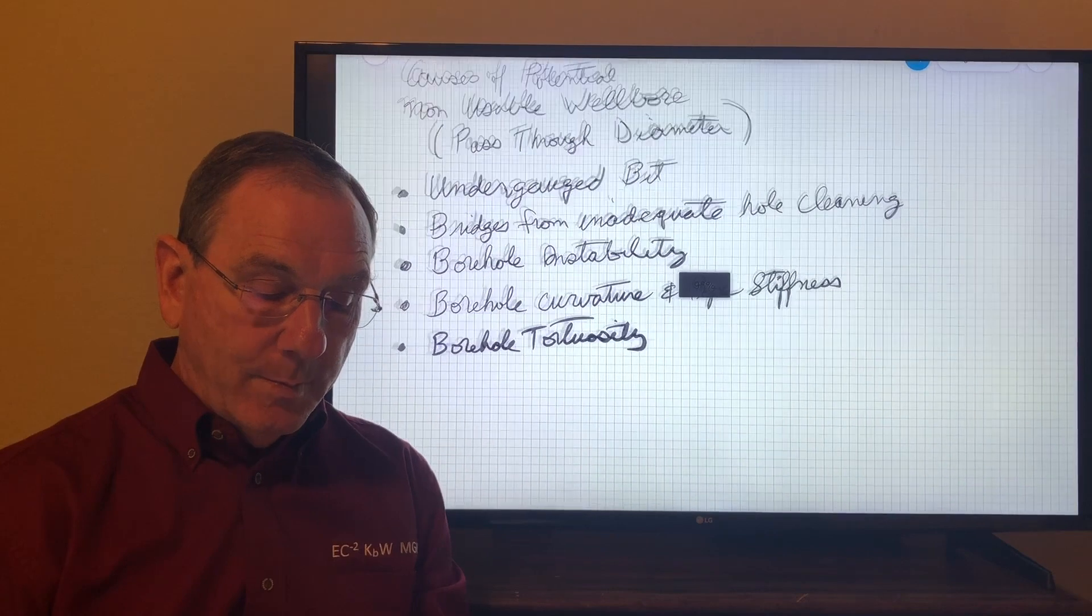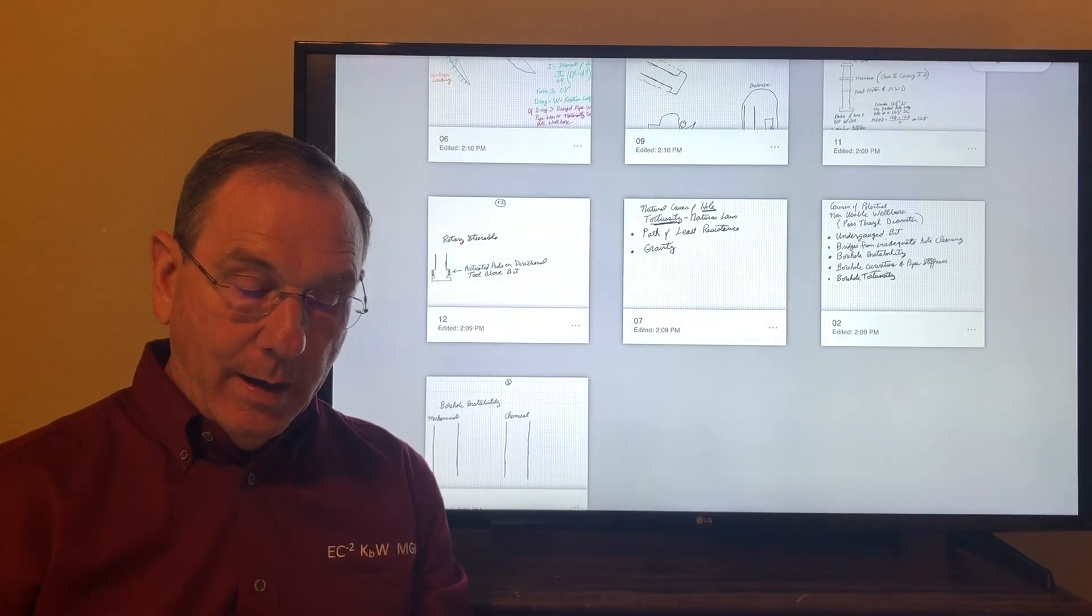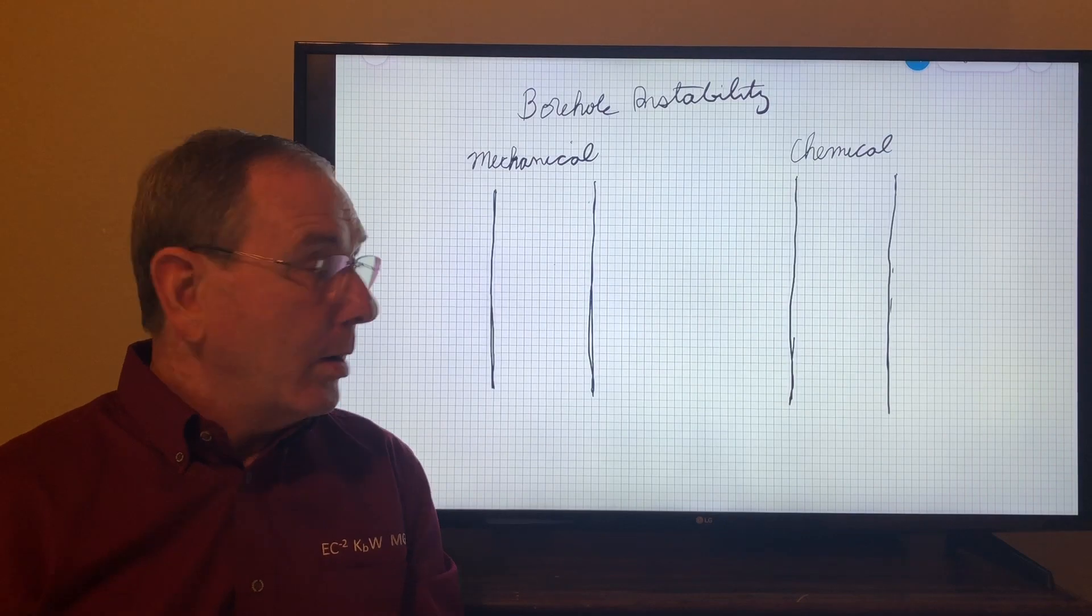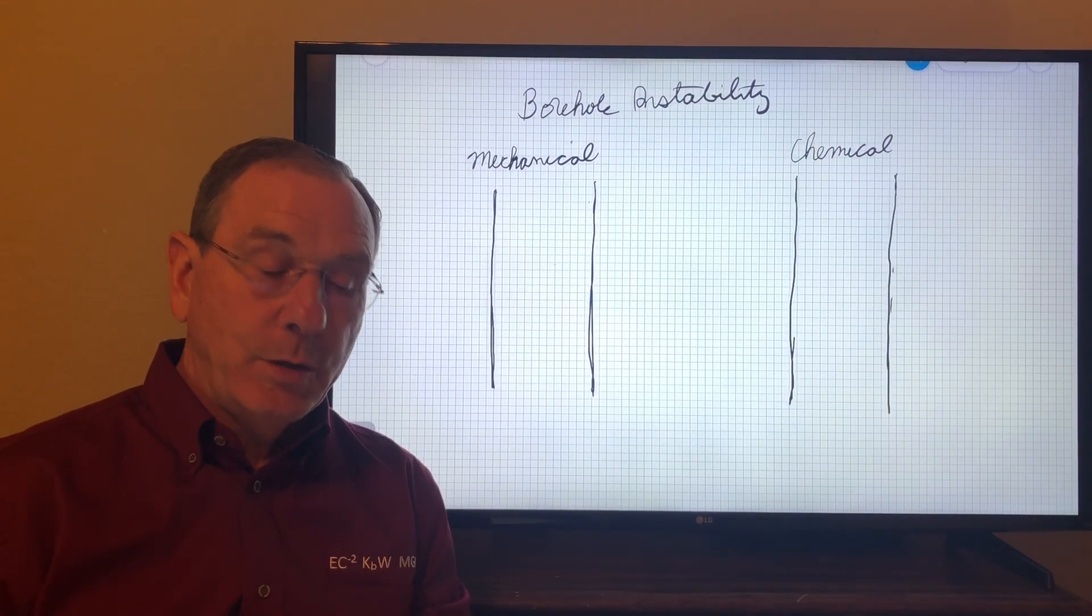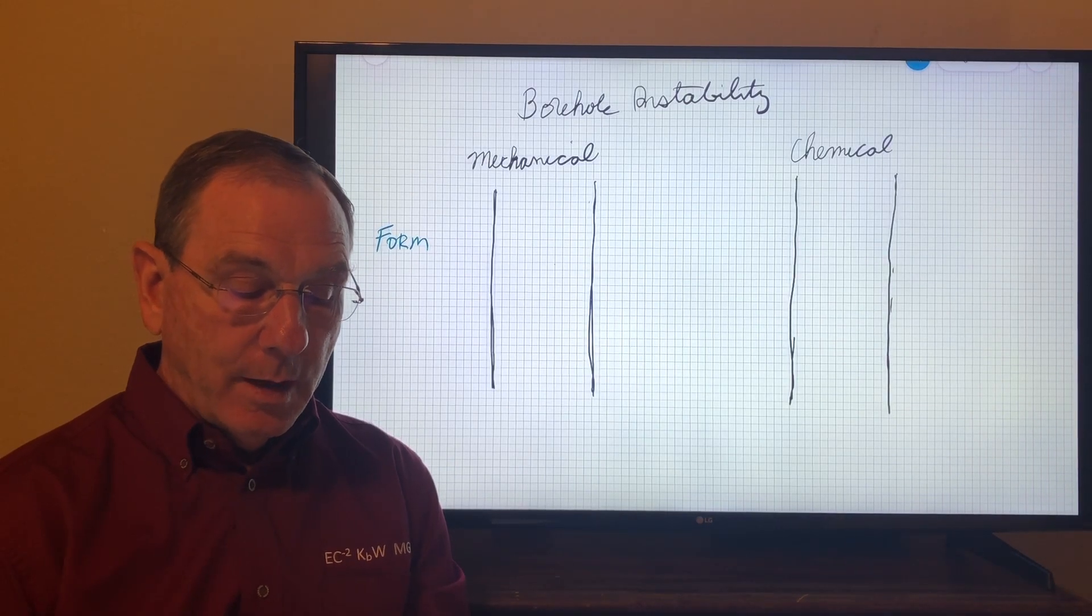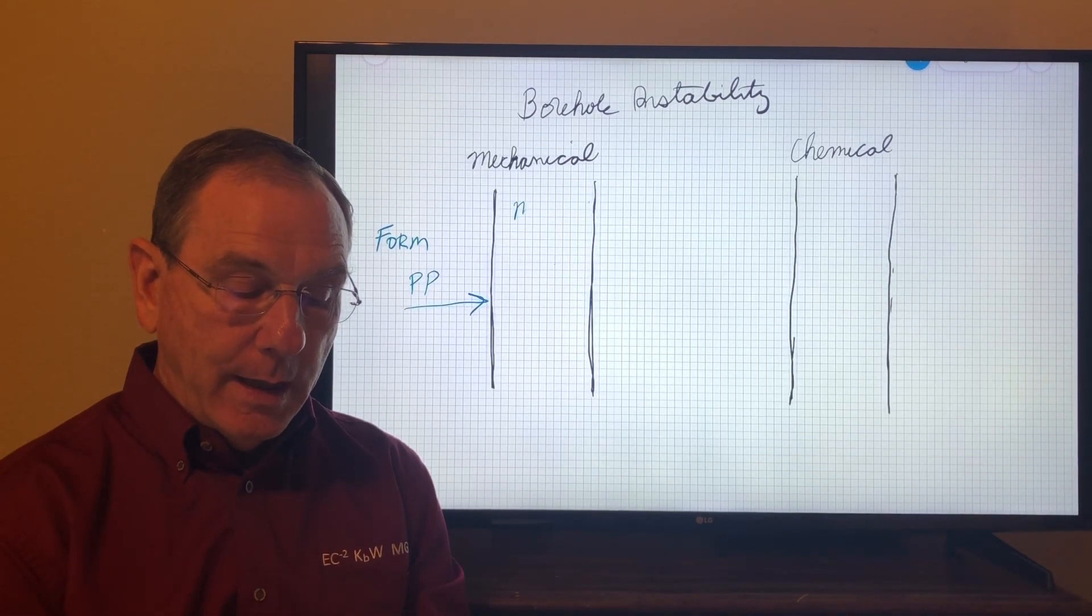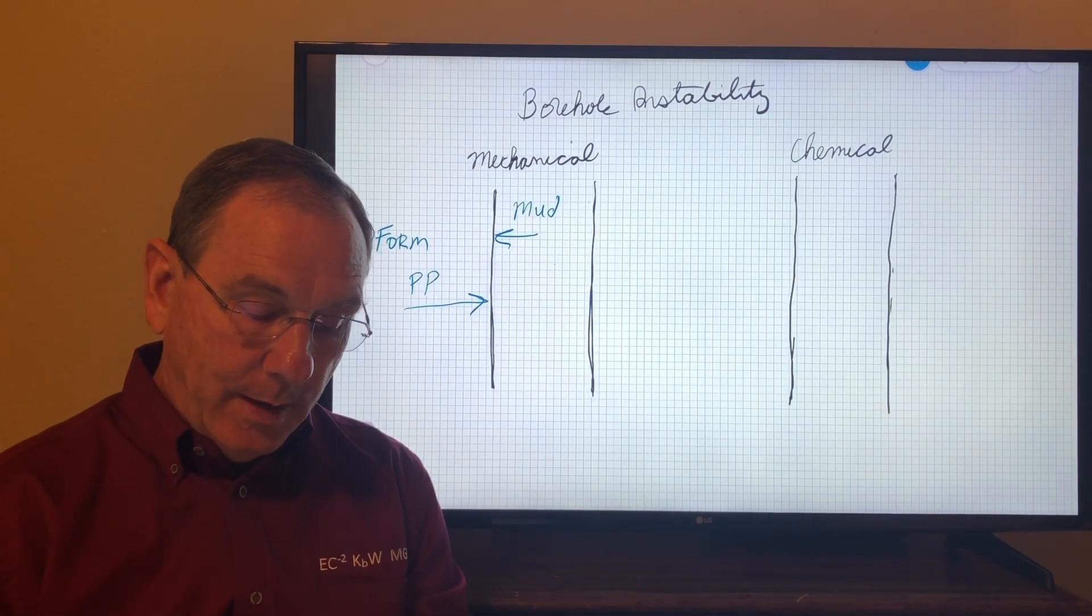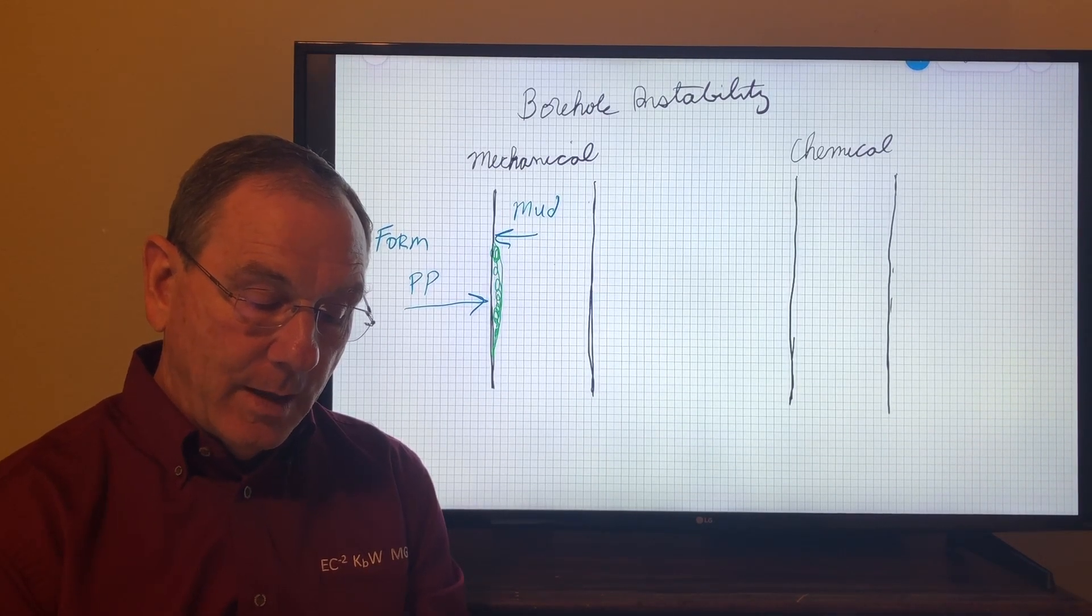Another potential cause could be borehole instability. There could be two possible causes: one mechanical and one chemical in nature. If you have mechanical instability, it's related to rock mechanics. The formation has a certain pore pressure pushing against your borehole, and you have mud inside the borehole pushing back against the formation. If the mud weight is not adequate, what can happen is that over a portion of the wellbore it actually closes in because of the rock mechanics effect and borehole stability.